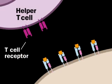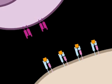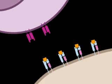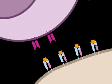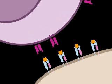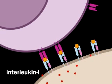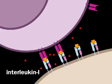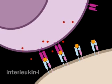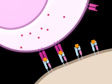A helper T cell can bind the displayed antigen if the T cell has surface T cell receptors that correspond to a specific antigenic determinant on the displayed antigen. Once the helper T cell has docked, the antigen-presenting cell releases interleukin-1, a cytokine that activates the helper T cell.